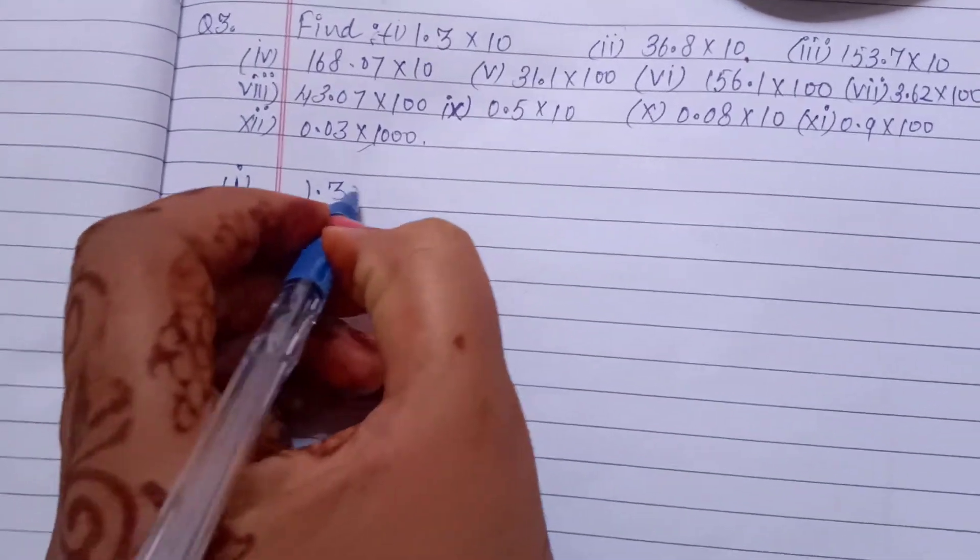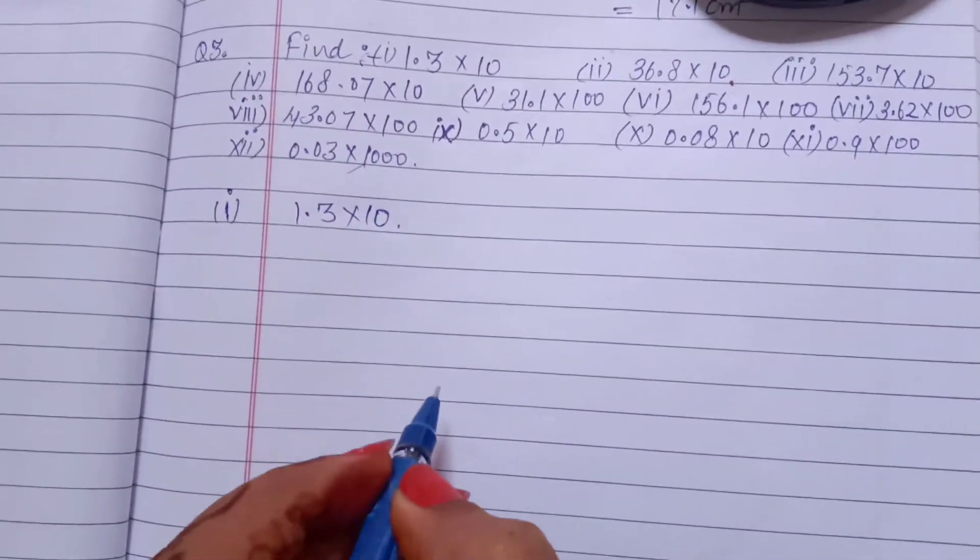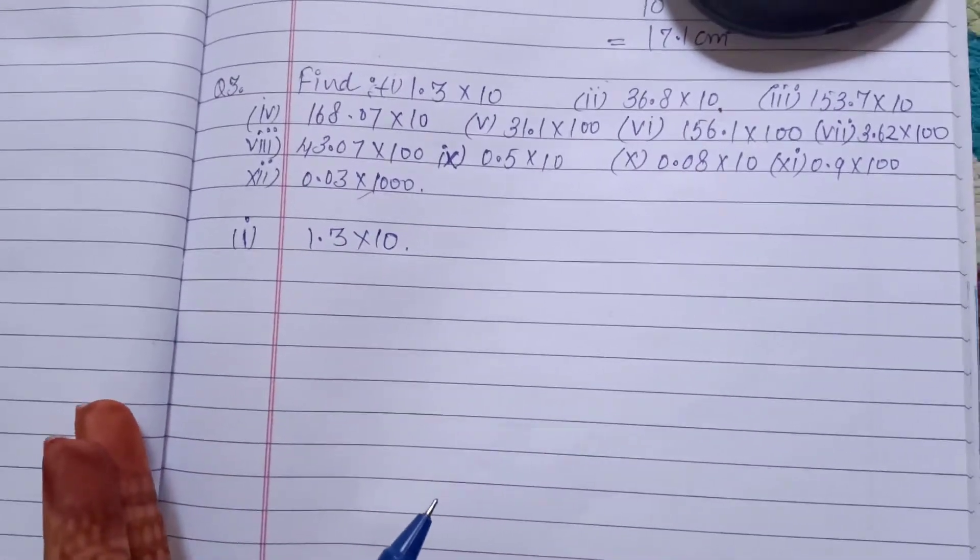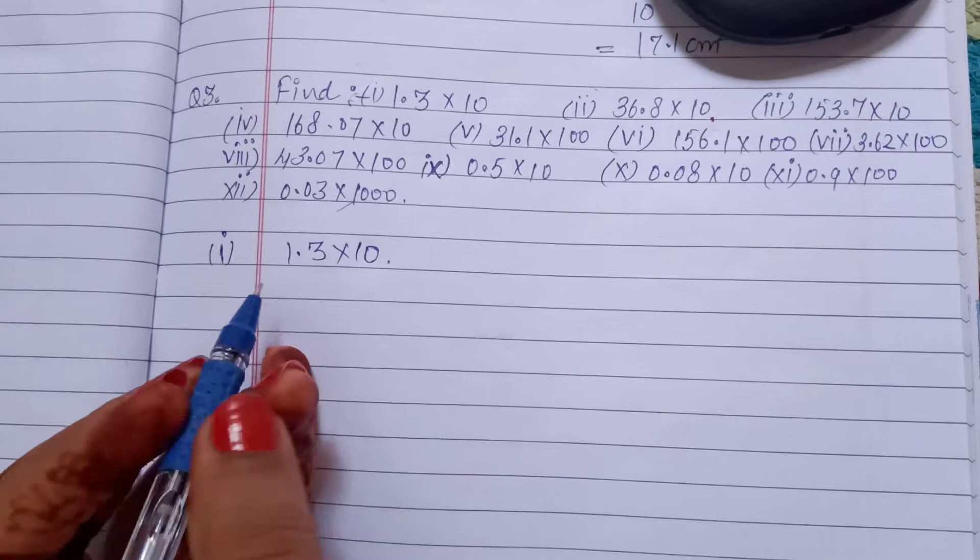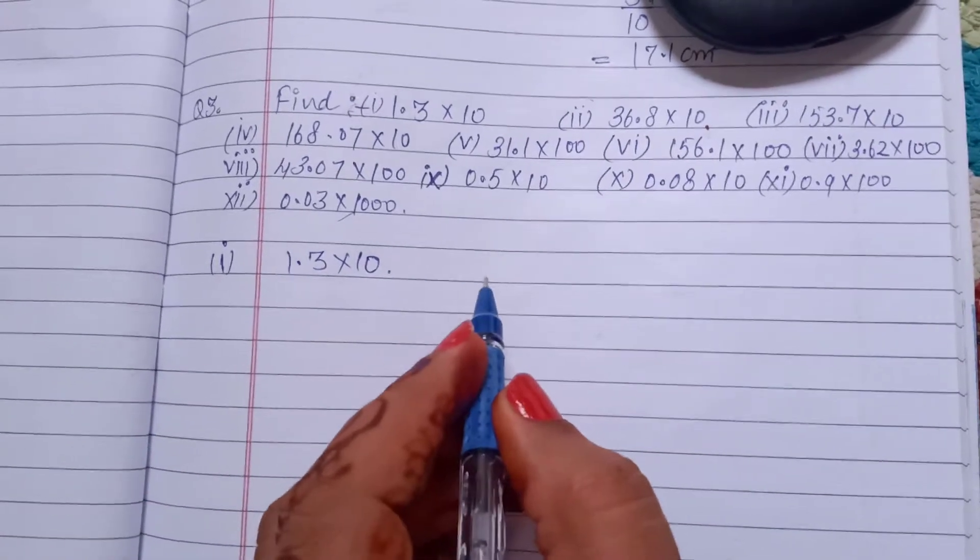1.3 into 10. This question is solved by two methods: one is remove the decimal, or otherwise shift the decimal place.